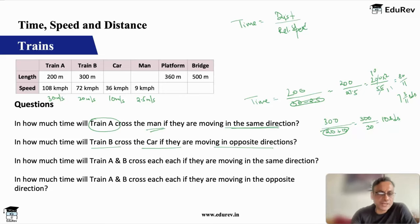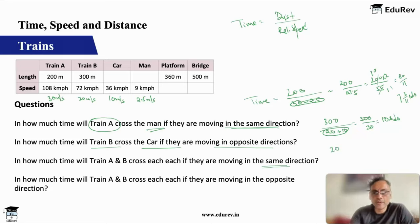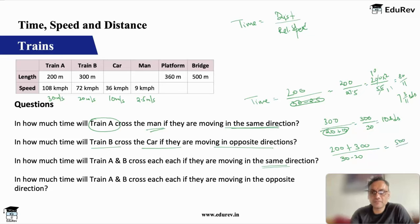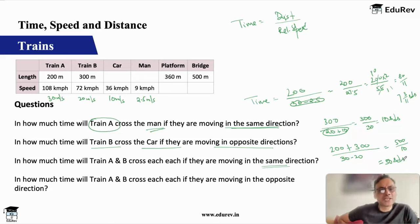Question: in how much time will train A and B cross each other moving in the same direction? Both trains have length, so distance = 200 + 300 = 500 meters. Same direction means we subtract speeds: 30 − 20 = 10 m/s relative speed. Time = 500 ÷ 10 = 50 seconds. It takes much more time when moving in the same direction because the relative speed is only 10 — the faster train overtakes the slower one at just 10 meters per second.